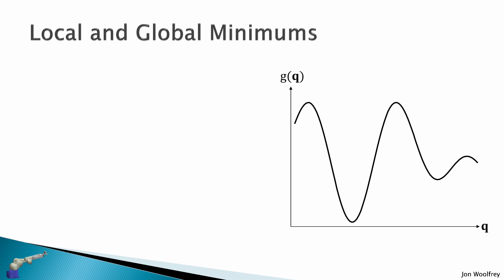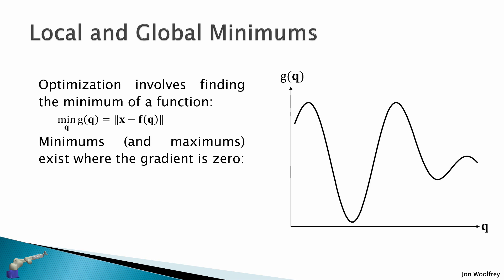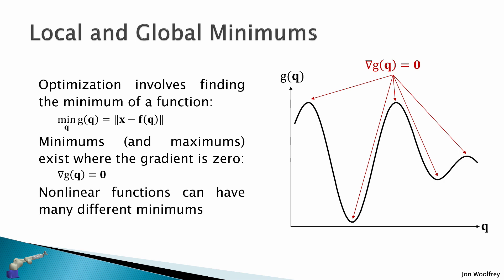Now we need to consider local and global minimums. Optimization involves finding the minimum of a function, that is we minimize this scalar cost function given our decision variable q. The minimums or maximums exist where the gradient of this function is zero. Non-linear functions can have many different minimums, so we have local minimums and global minimums.